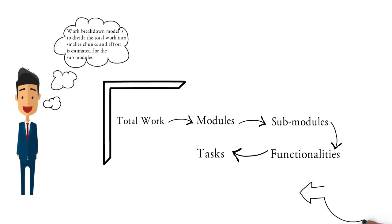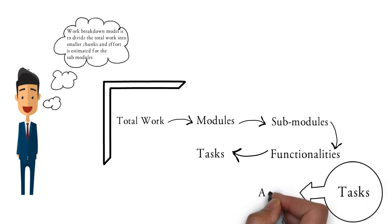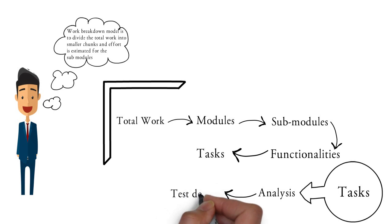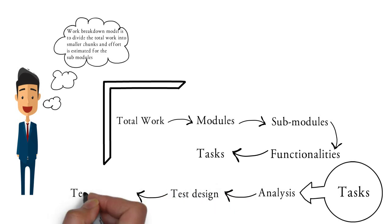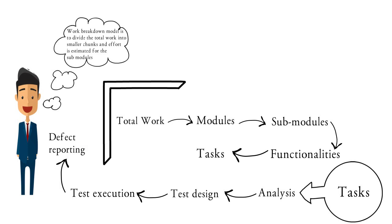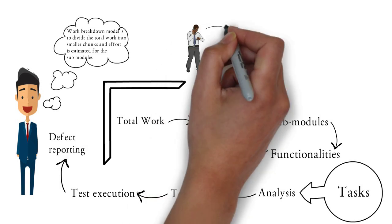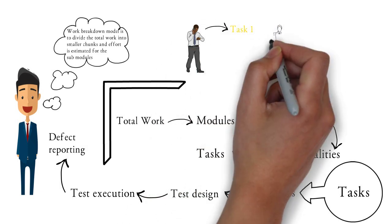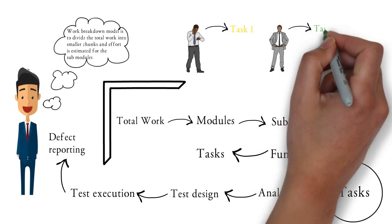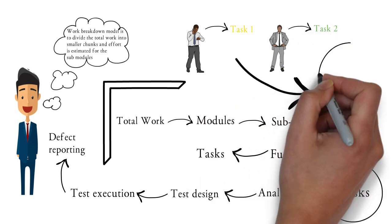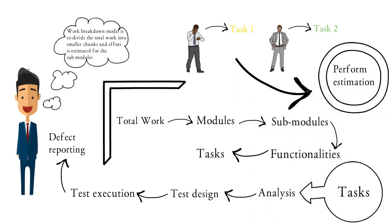For each of the functionalities, different tasks can be assigned, and finally the estimation is performed for each of the tasks. In a software testing project, the different tasks can be analyzing the requirements, designing the test cases, executing the test cases, and finding out the defects. Different tasks are assigned to different testers and they do the estimation, so finally the total effort required for completing the project is arrived.